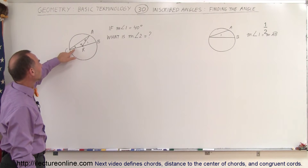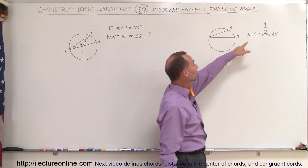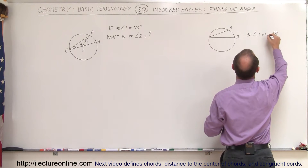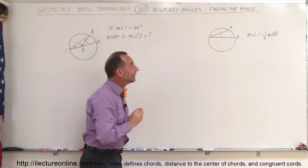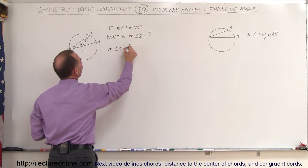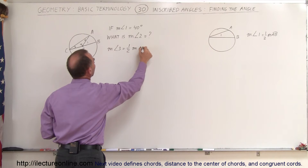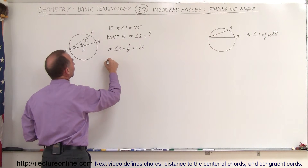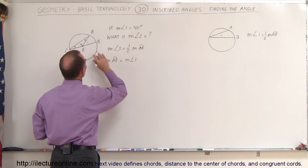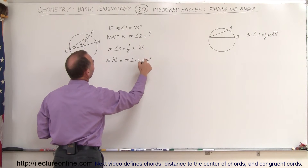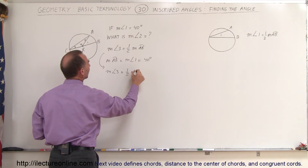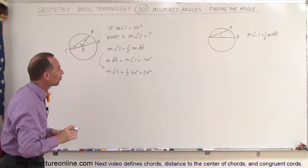We can find the measure of angle 3 using the rule that the measure of an inscribed angle is always equal to one half the measure of the arc that it subtends. So the measure of angle 3 equals one half the measure of arc AB. The measure of arc AB equals the central angle 1, which is 40 degrees. Therefore, the measure of angle 3 is one half of 40 degrees, which equals 20 degrees.